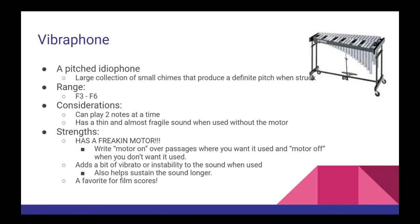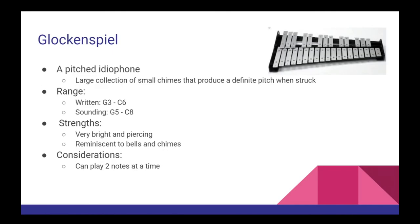Continuing with our theme of pitched idiophones, the next instrument is the glockenspiel. With a written range of G3 to C6, and a sounding range that is two octaves higher, this instrument has a very bright and incredibly piercing sound that's very reminiscent of bells or almost like chimes. Like the xylophone, it's played with just two mallets.